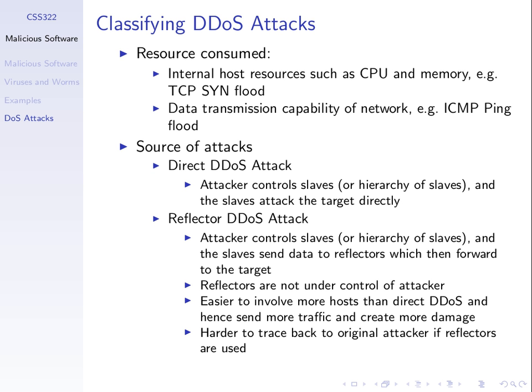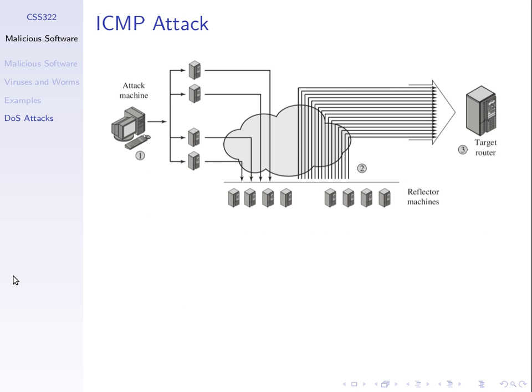The attacker needs to get access to the slaves and infect them. How do you infect other computers? You look for bugs or vulnerabilities in those computers using malicious software — that's not trivial. But to get computers that are not infected to send packets is easy with a number of protocols. So you can get more reflectors than slaves, and the more you have in a distributed denial of service attack, the more effective the attack is.